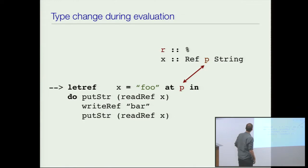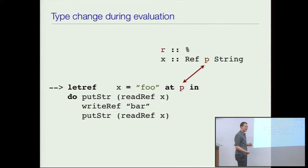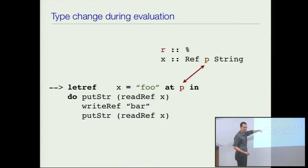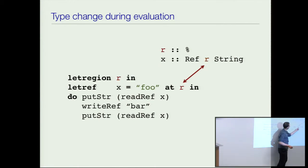This defines a new region and I'm creating a reference x in that region. What's the type of x? X has type 'ref r string' — the reference is in that region. Look at this r in the type. When it steps, you generate a new region handle and substitute the handle P for all occurrences of r in the term. So now x has type 'ref p string' and not 'ref r string'. The type has changed during evaluation.